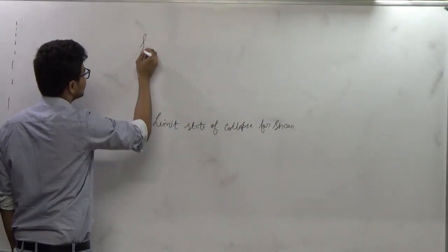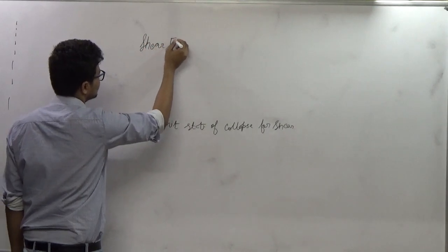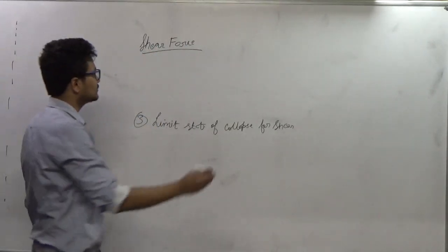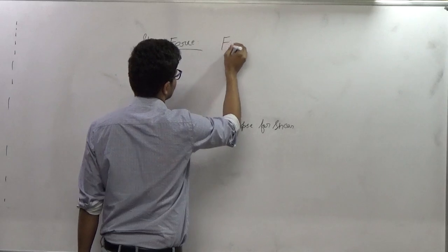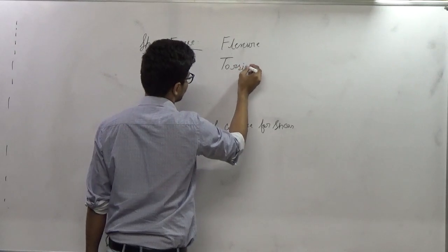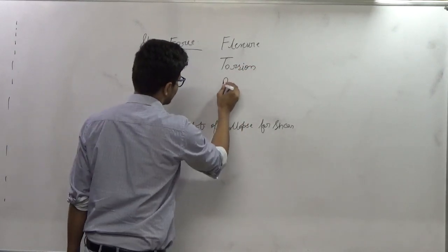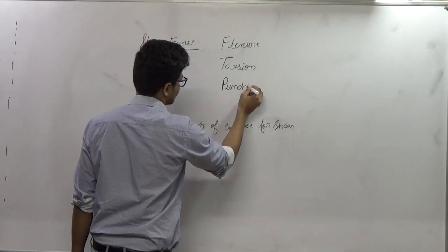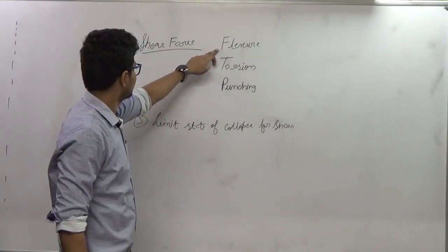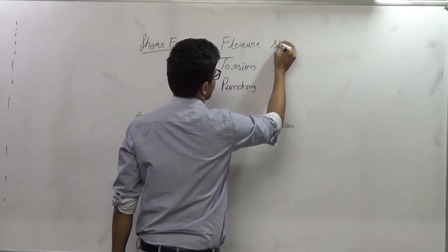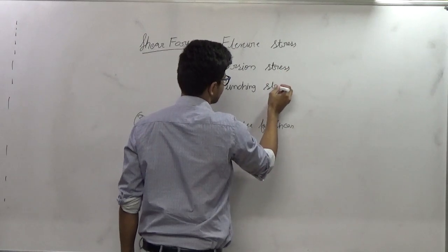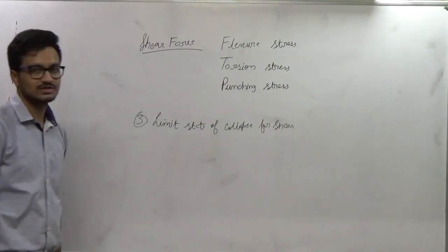Now, if you look at the shear force in structural members, it can be generated either due to flexure, torsion, or it can be generated due to punching. Therefore, accordingly, the shear stresses are known as flexural stress, torsion stress, and punching stress. So these three are part of shear stresses.